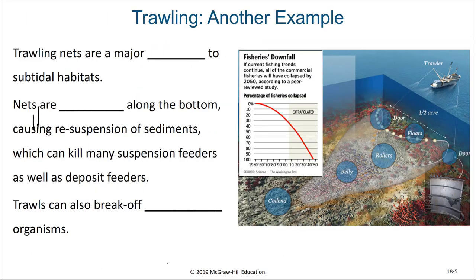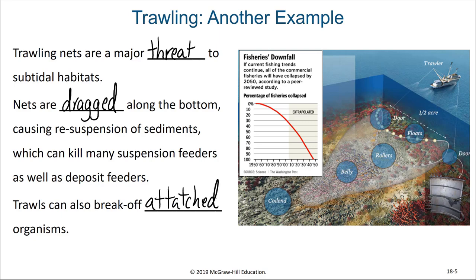Another way we destroy habitats is through trawling. Trawling nets are a major threat to subtidal habitats. Bottom trawling is when nets are dragged along the bottom, causing resuspension of sediments, which can kill many suspension feeders as well as deposit feeders. Trawls can also break off attached organisms and totally disturb the soft bottom community, typically leading to destruction of that habitat. There's a short video clip from the animated movie Ponyo that can show you what this trawling looks like — it will be available after this video.